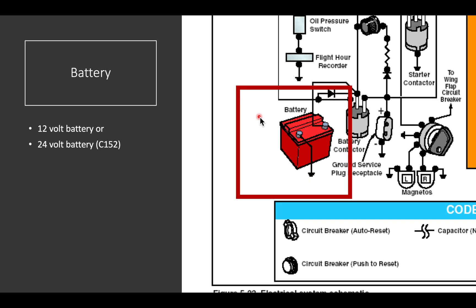We're going to start with the battery. It's very important that you know what voltage your battery is. The Cessna 152 is a 24-volt battery. The older Cessna 150s are 12-volt batteries.